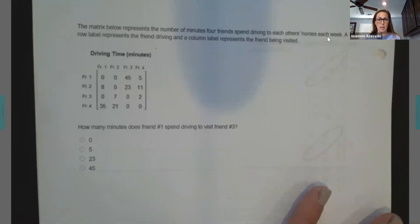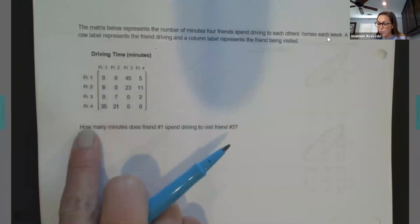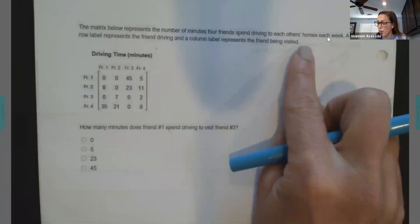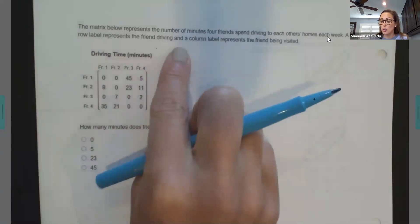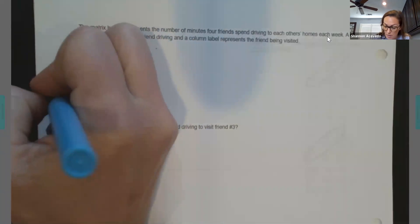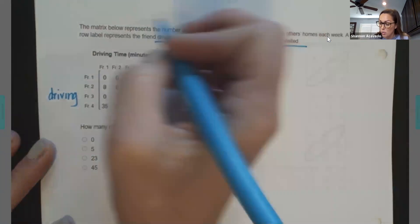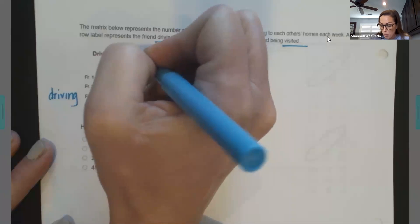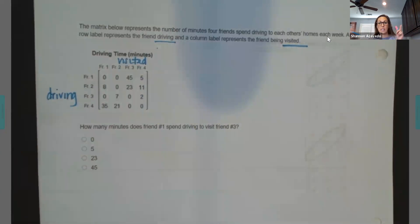And my very last one. Okay. The matrix below represents the number of minutes four friends spend driving to each other's homes each week. So here's our friends, but I like to label more information because there's going to be some more info. A row label represents the friend driving. So the rows are talking about the friend that is driving. That's important. A column represents a friend being visited. So these are the people who are being visited. It's important because if friend three drives to visit friend two, it's different than friend two driving to visit friend three. So even though there's the same friends seeing each other, it's different depending on who's driving and who's visiting. So it's very important that you know which one is what.